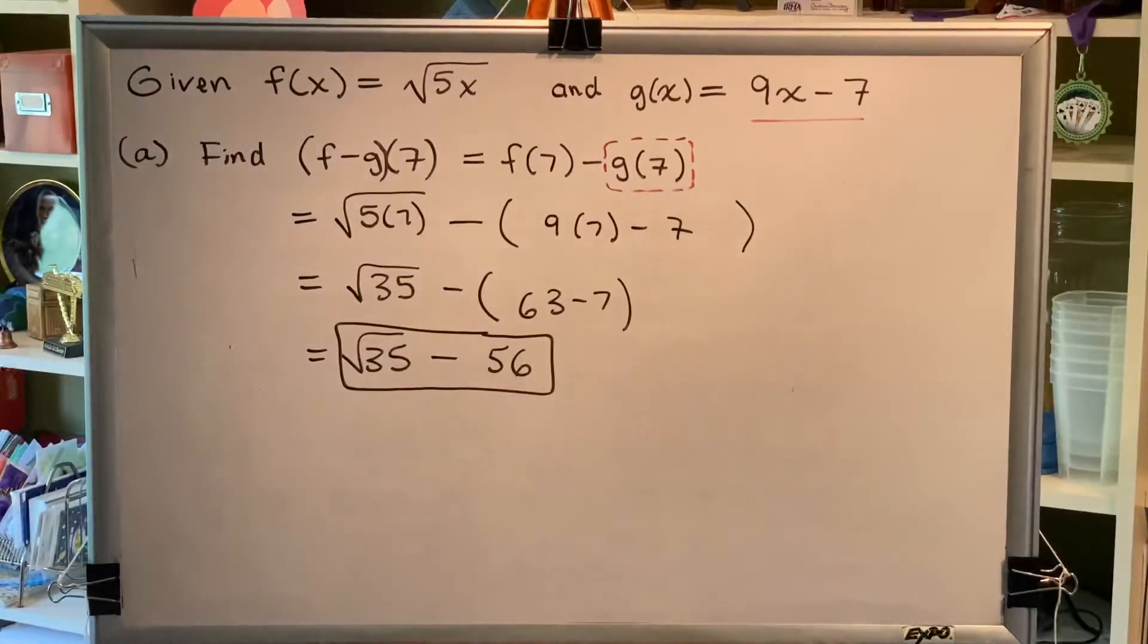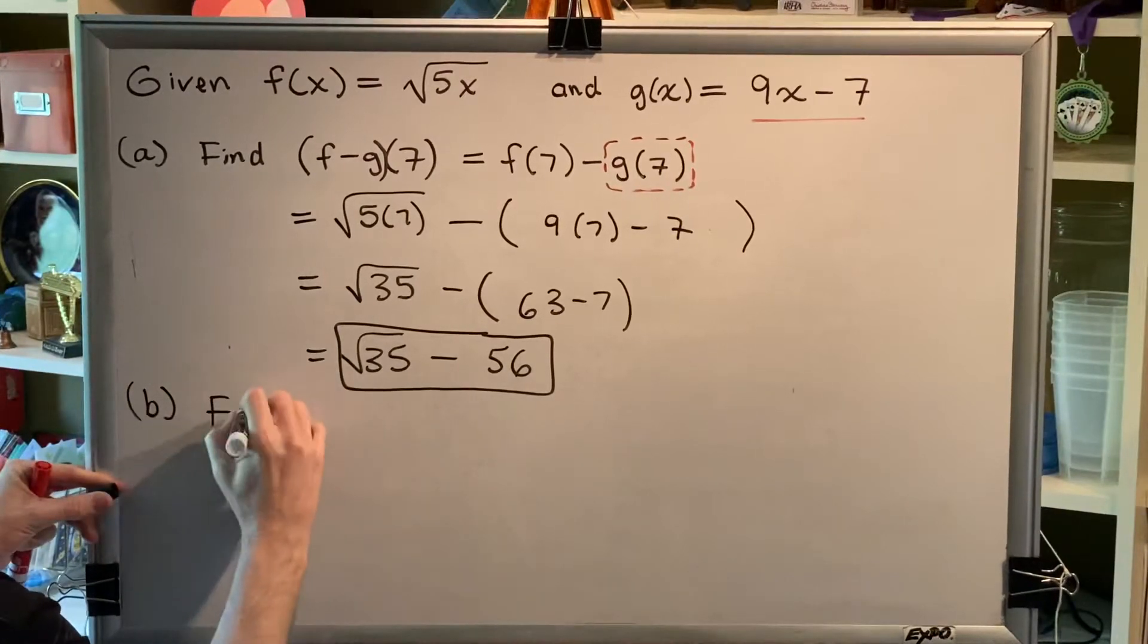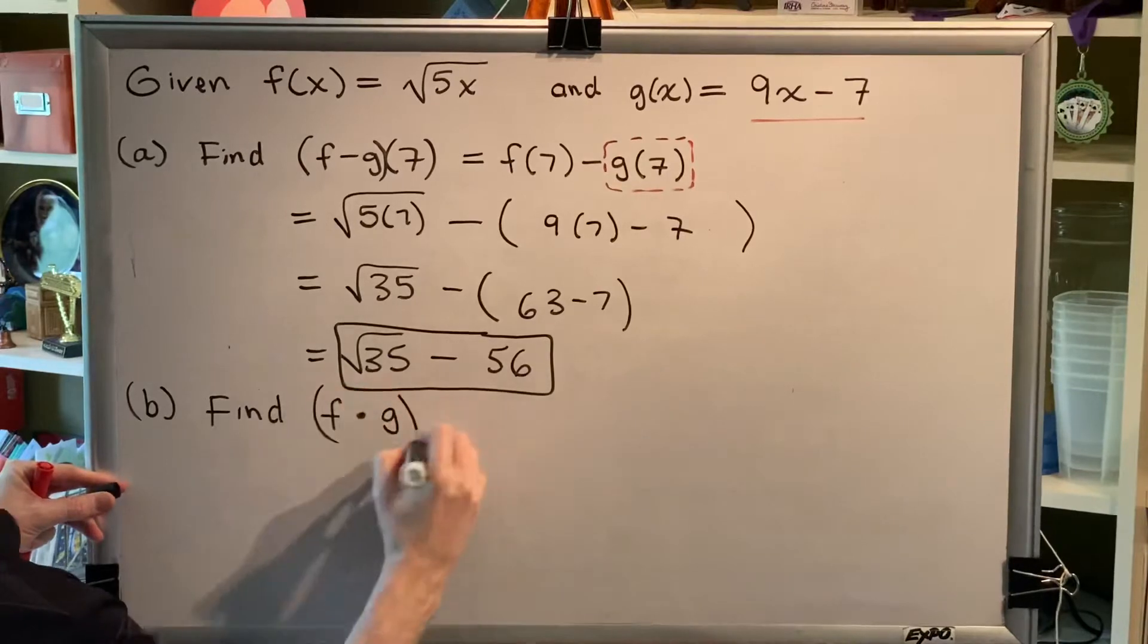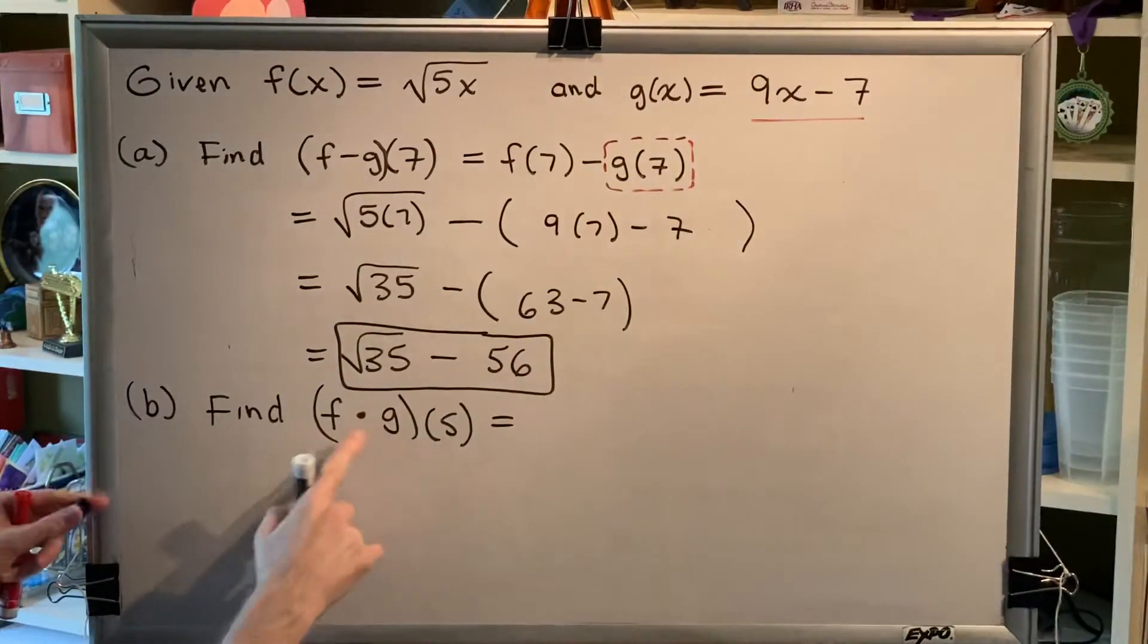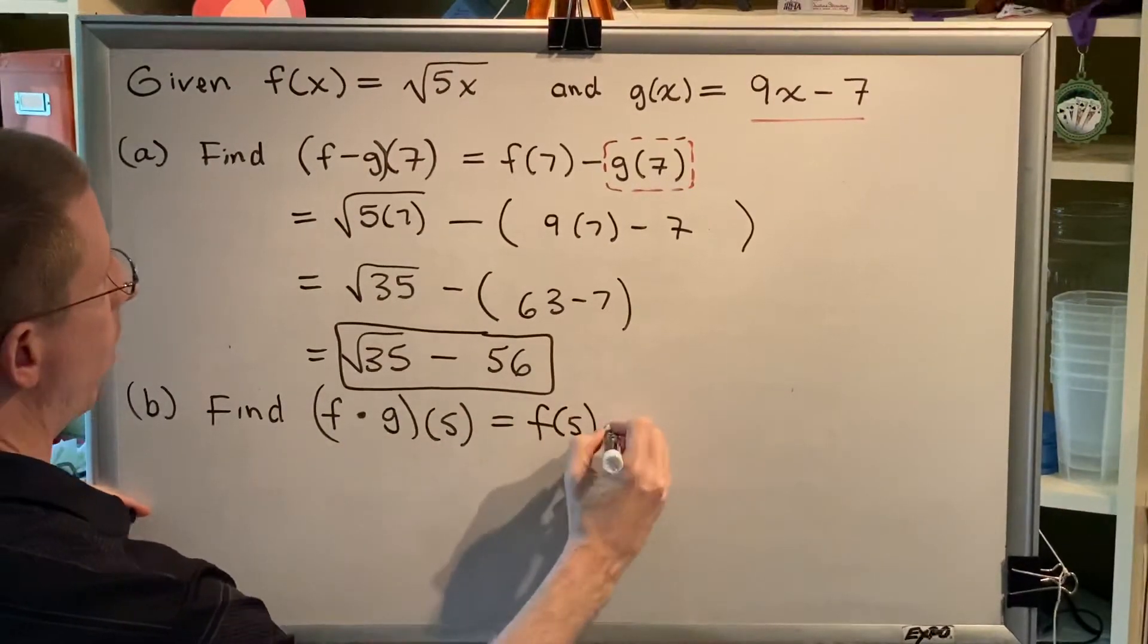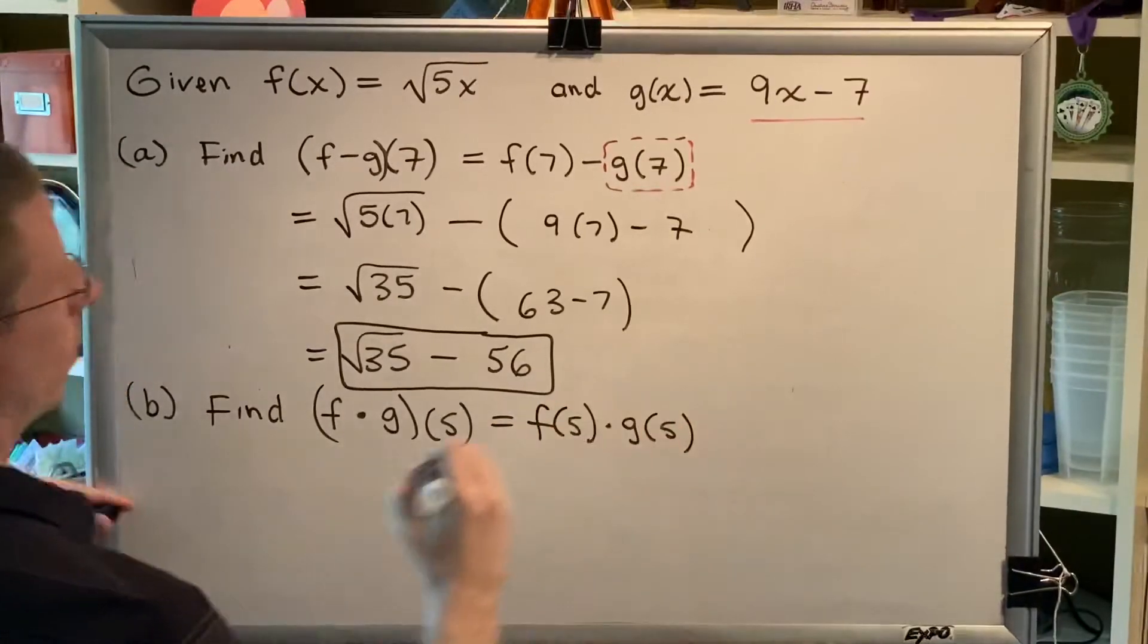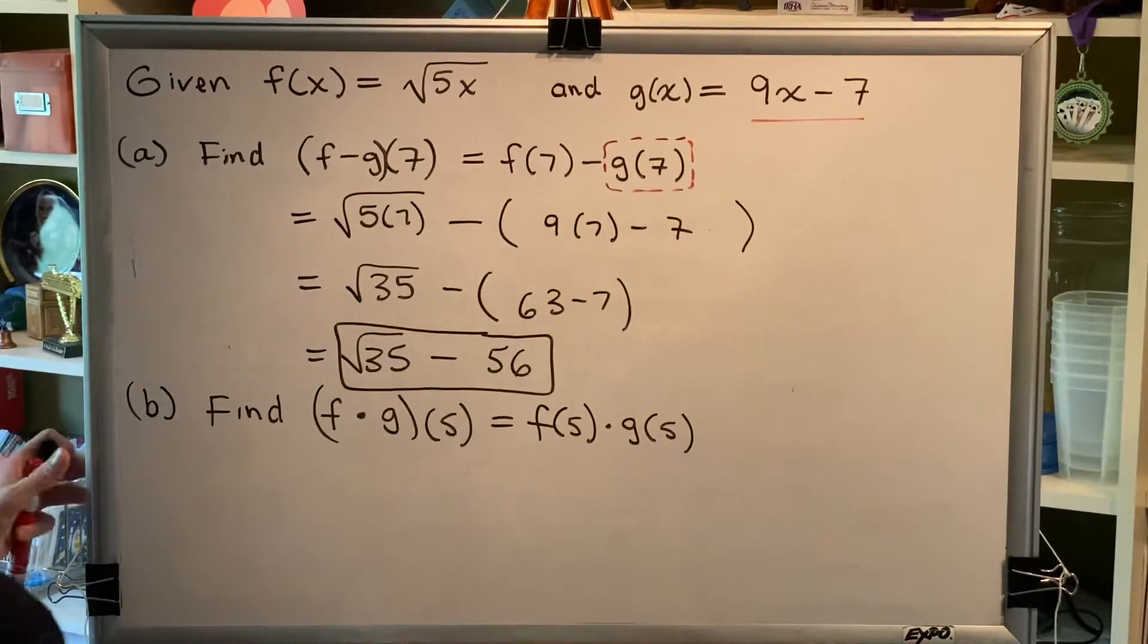Part B asks us to find (f · g)(5). Alright, well, (f · g) just means take our two functions, f and g, and multiply them, and the 5 tells me that the input of each one is 5. So, I'm going to get that. Alright, so, here we go.